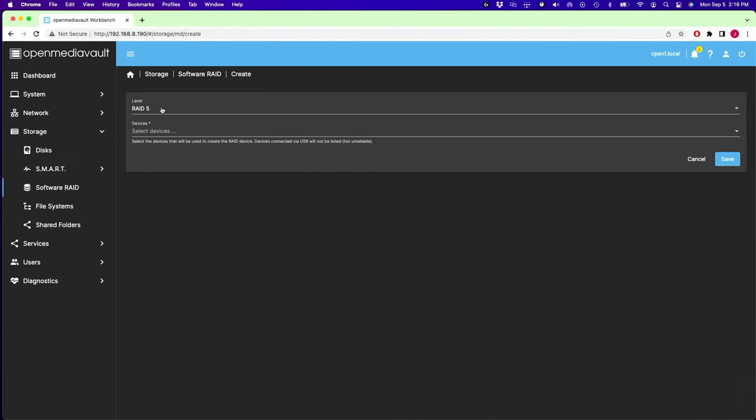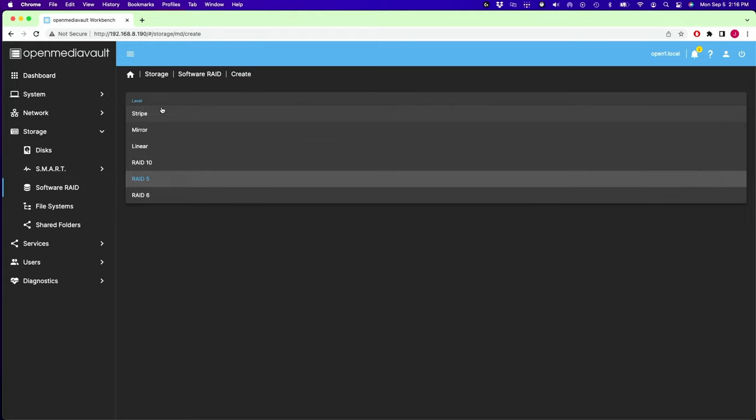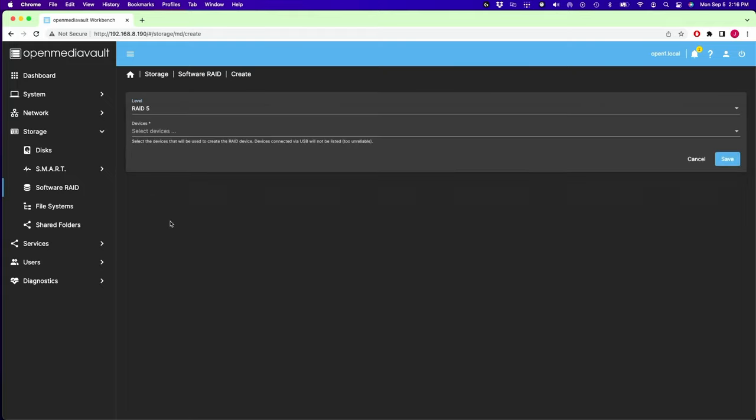Software RAID lets us create a RAID array. If we have more than one disk, we can stripe, mirror, linear, RAID 10, 5, or 6. You would select your devices here and then click save. I only have one hard drive attached to this computer, so I can't do RAID.